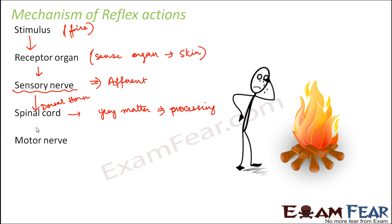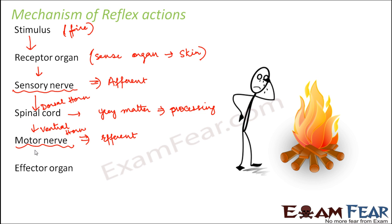From the spinal cord, the signal moves to the motor nerve through the ventral horn, because the ventral horn of the spinal cord is connected to the motor nerve. The motor nerve, which is also known as the efferent nerve fiber, carries the response. The response is also in the form of an electric impulse, so these efferent nerve fibers carry the electrical impulse to the effector organ.